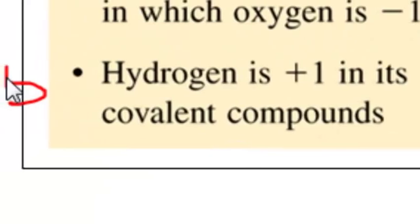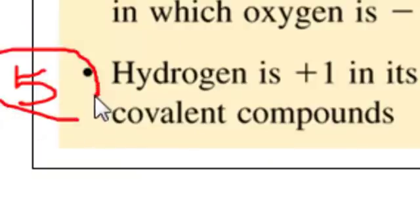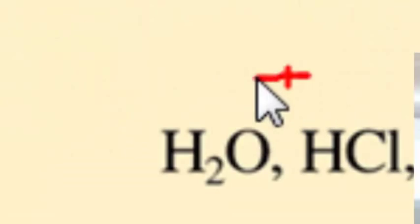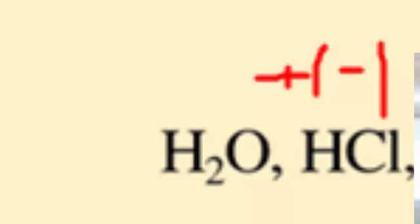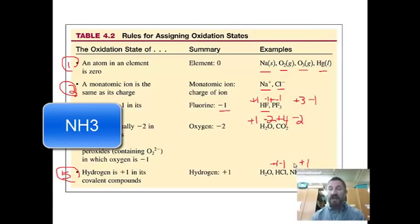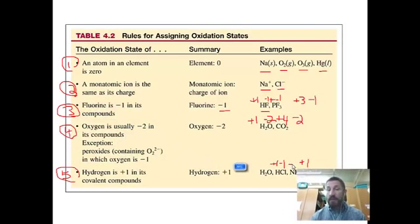Rule number five: hydrogen is positive one in its covalent compounds. If it's bonded with a metal, it's going to be negative one. In HCl, hydrogen is plus one and chlorine is minus one. In ammonia (NH₃), each of the three hydrogens is plus one, so nitrogen must be negative three to balance. Nitrogen's oxidation state is negative three; hydrogen's is positive one.